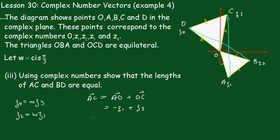BD. Now BD is equal to BO plus OD which is minus Z2 plus OD, Z4.